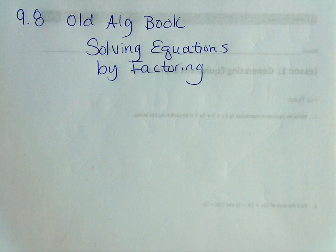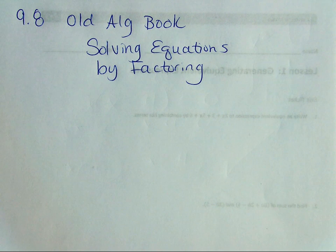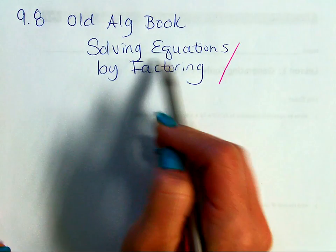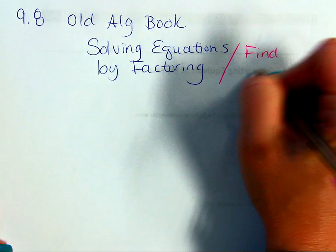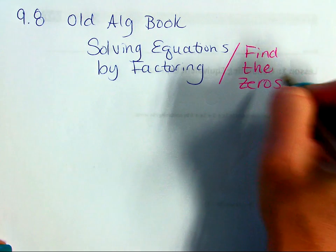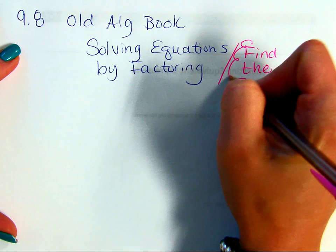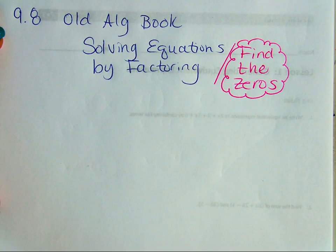We just got done factoring. We learned about how to factor, find the factors of trinomials and binomials, and today we're going to add on to that — and it's going to be really easy. Sometimes you'll see this title, 'Solving Equations by Factoring,' as asking you to find the zeros. If you already know how to factor, this will be really easy for you today.